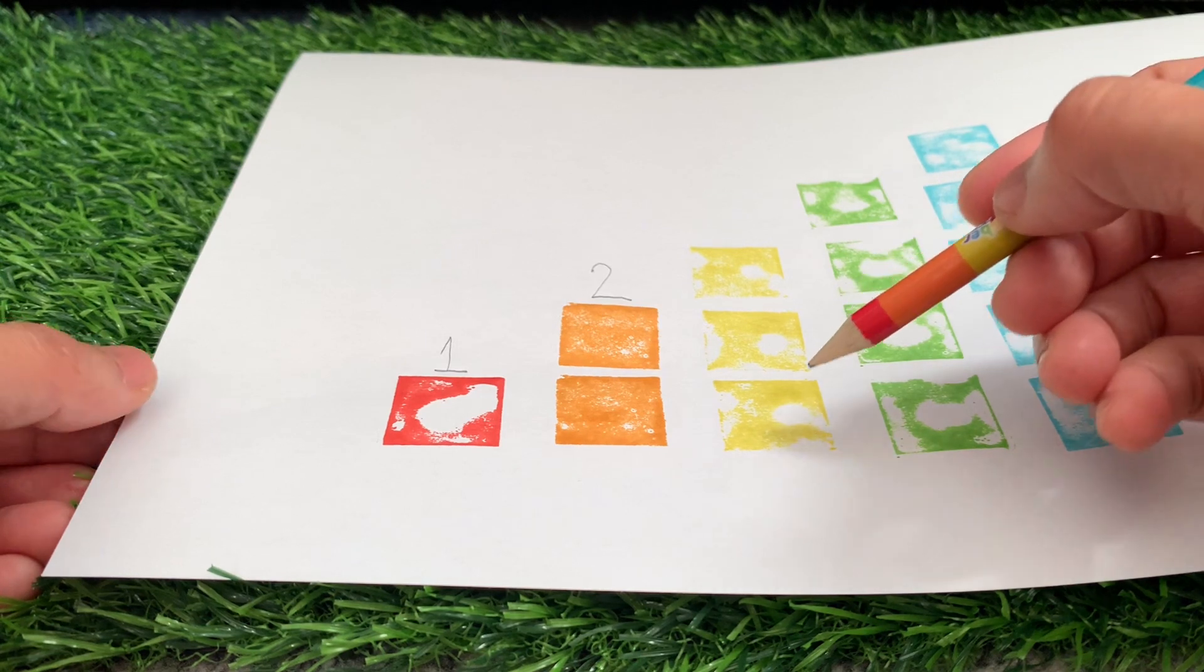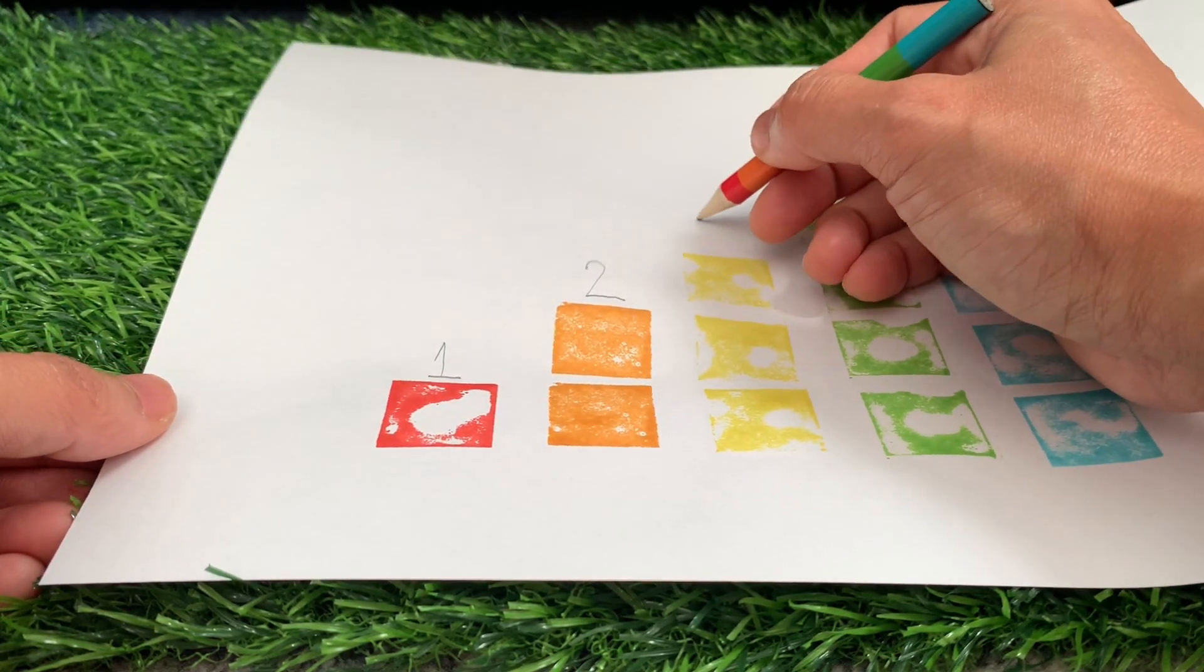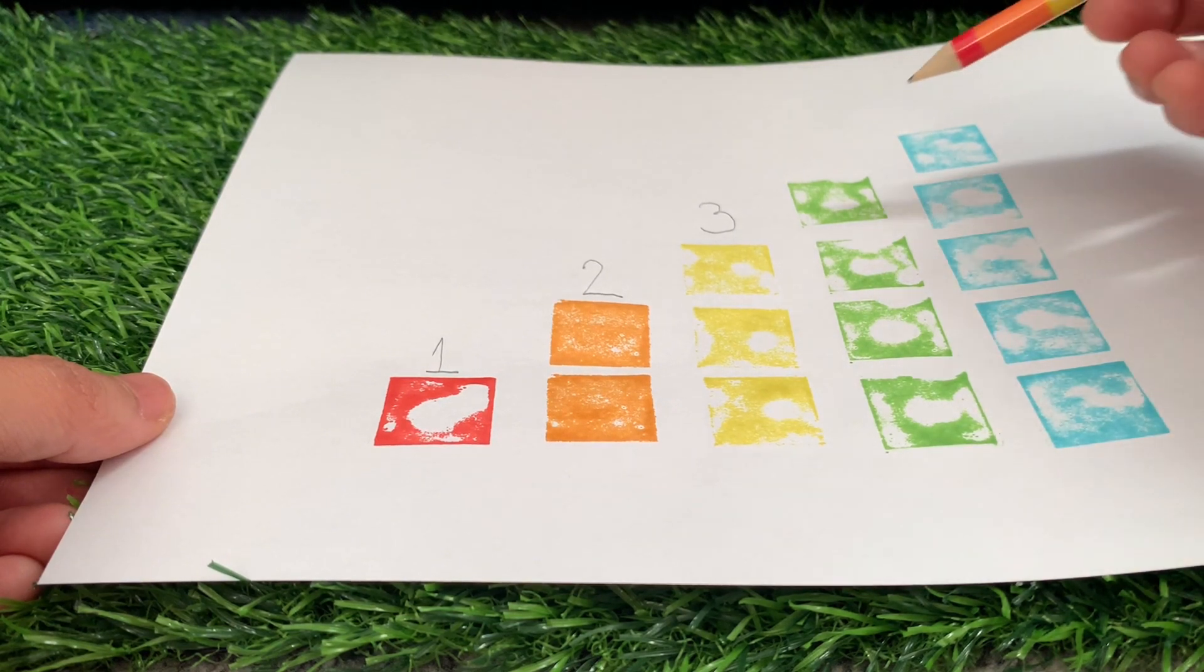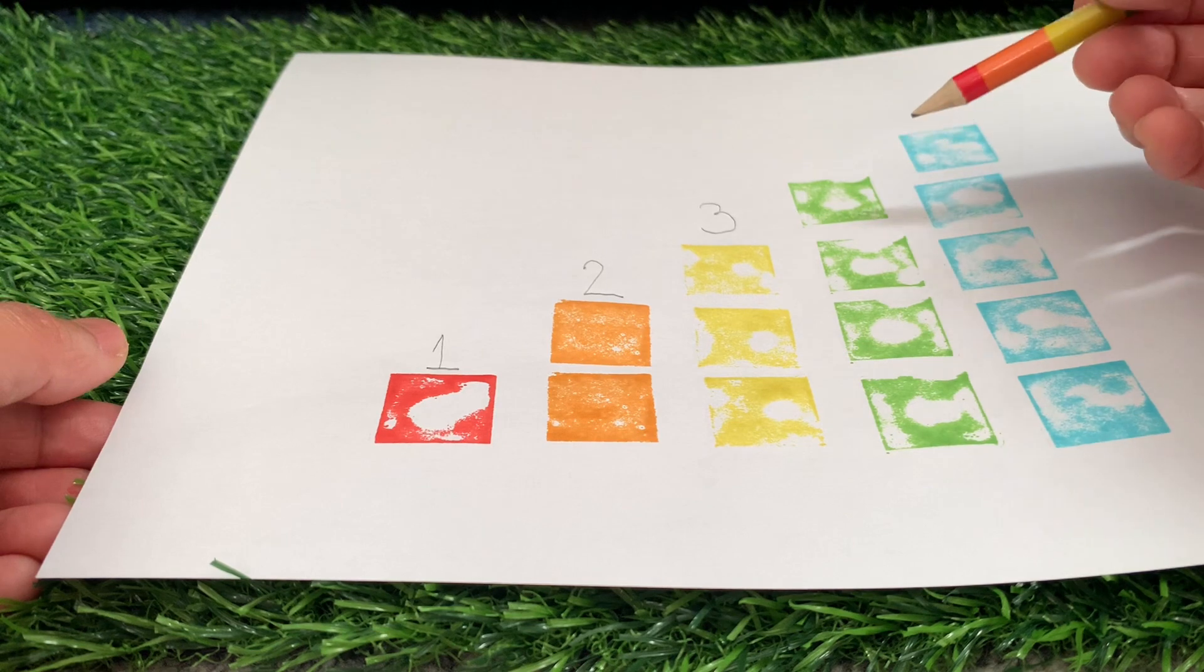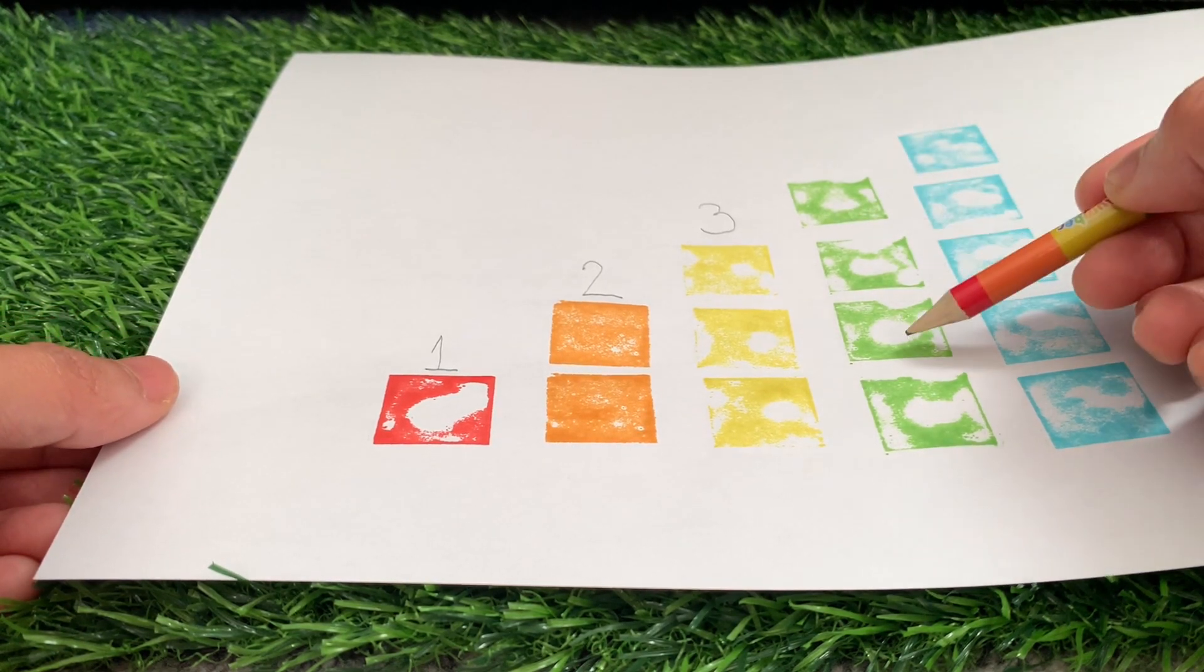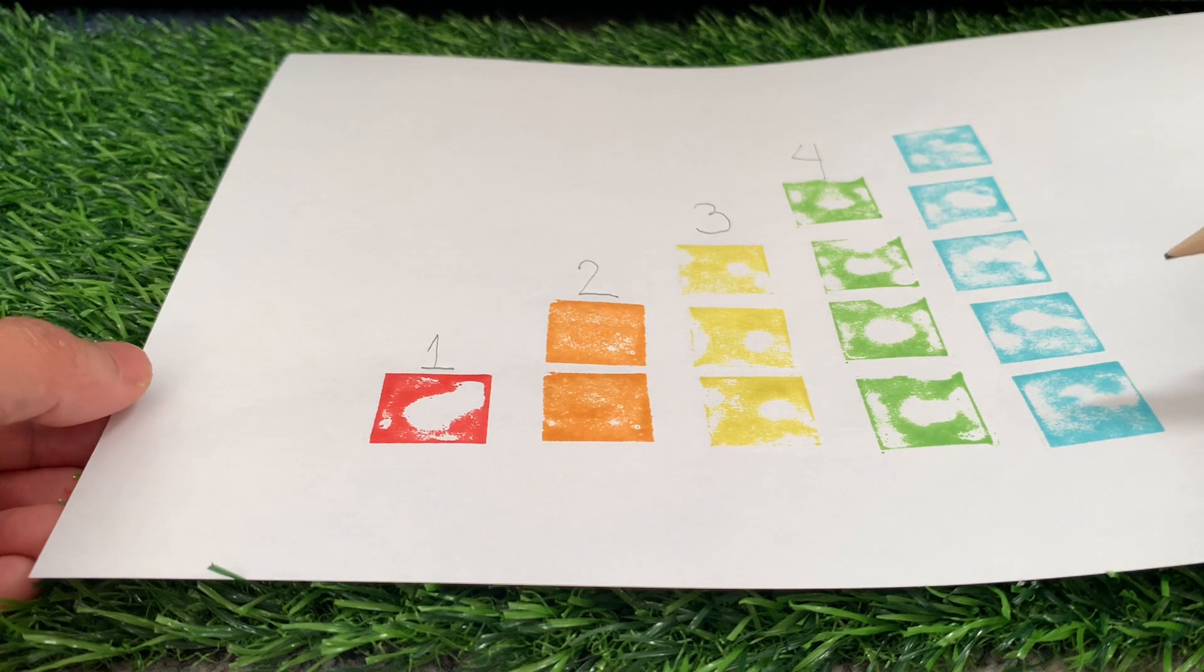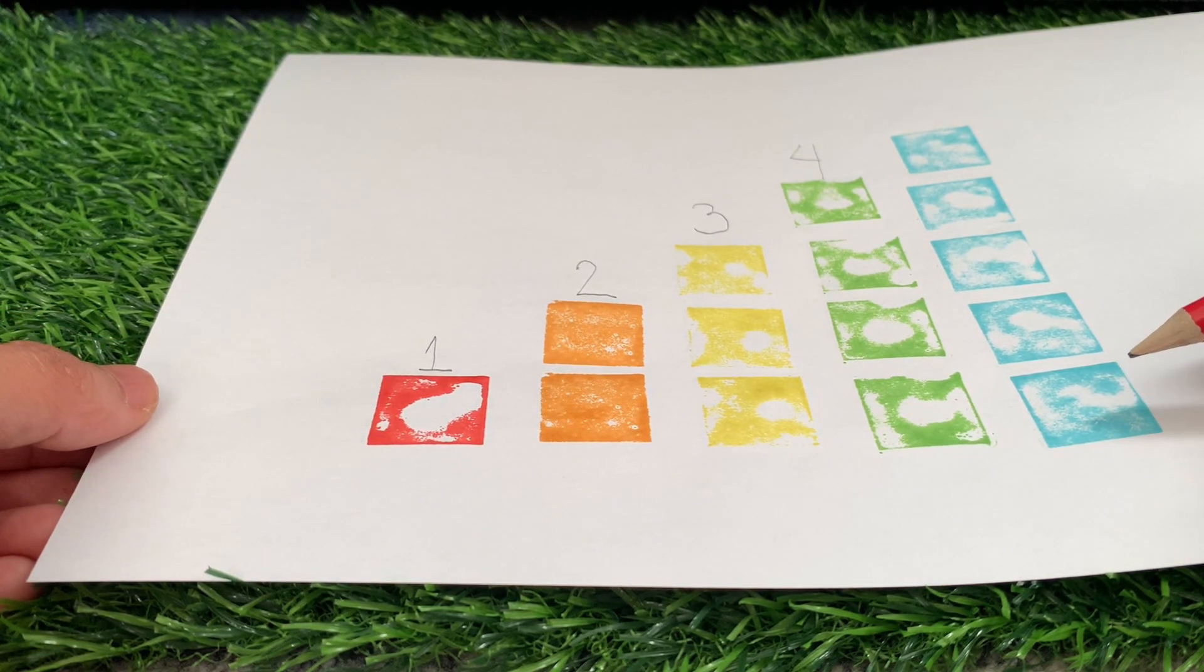Number three, let's count it. One, two, three. There it is, number three. Next is number blocks four. Let's count. One, two, three, and four. Number blocks four, color green. I love it.